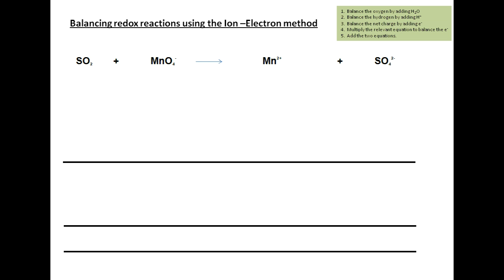Before we balance the oxygens and hydrogens, we have to identify the two relevant half-reactions. We see that MnO4⁻ is becoming Mn²⁺, and SO2 is becoming SO4²⁻, as written here.